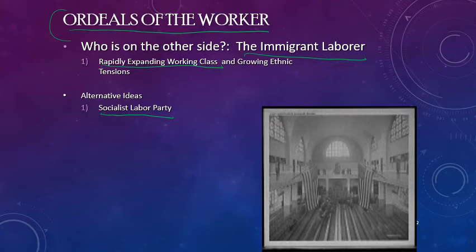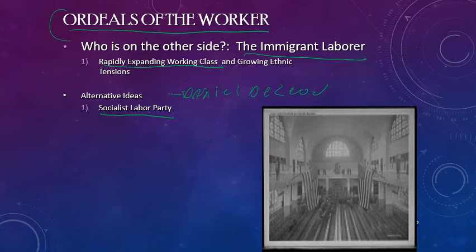Though they did have some supporters, the Socialist Labor Party that emerged in the 1870s never gained a ton of support. They did have a charismatic leader, a man by the name of Daniel DeLeon, but were never able to gain a substantial amount of support. They reemerged as the Socialist Party of America in the early 20th century with new leadership, but also still struggled to gain support. Another alternative that gains a little more support is the concept of Georgism.